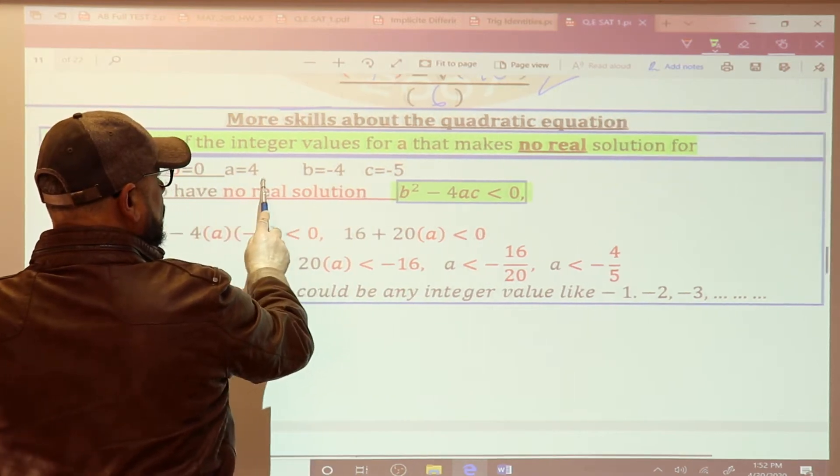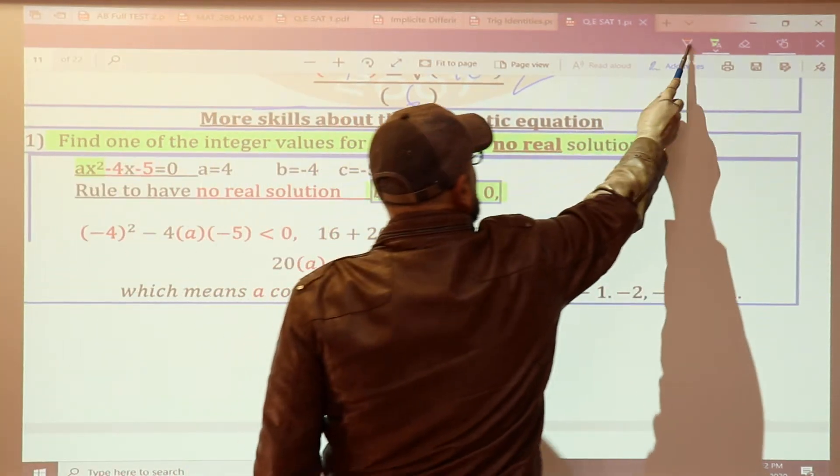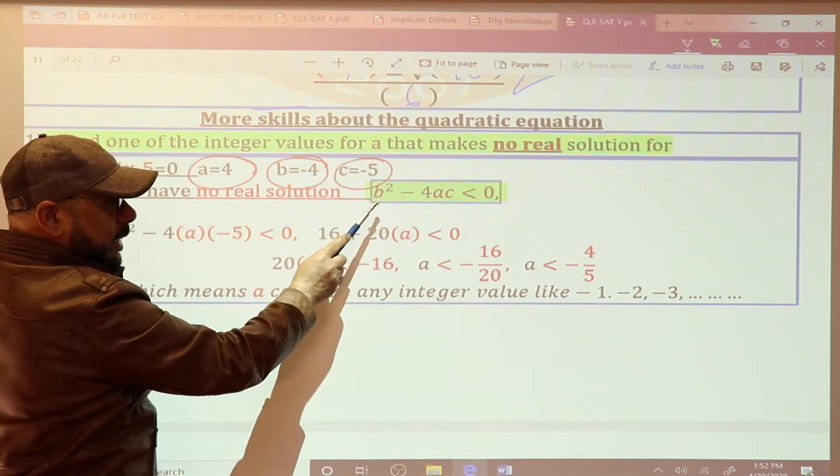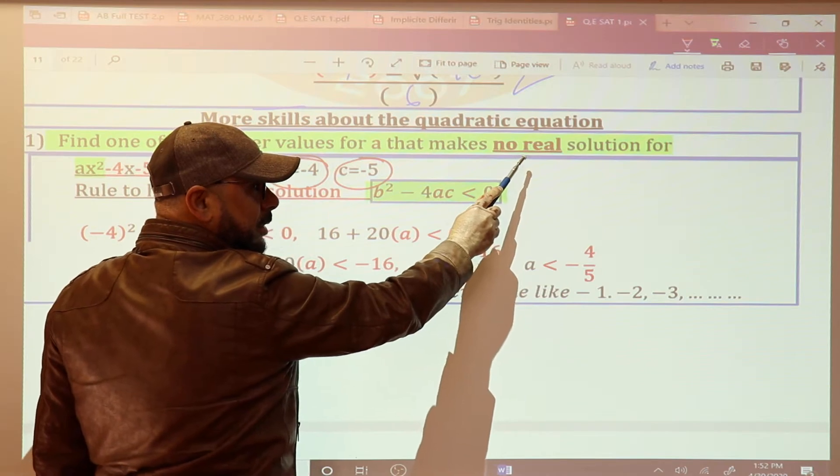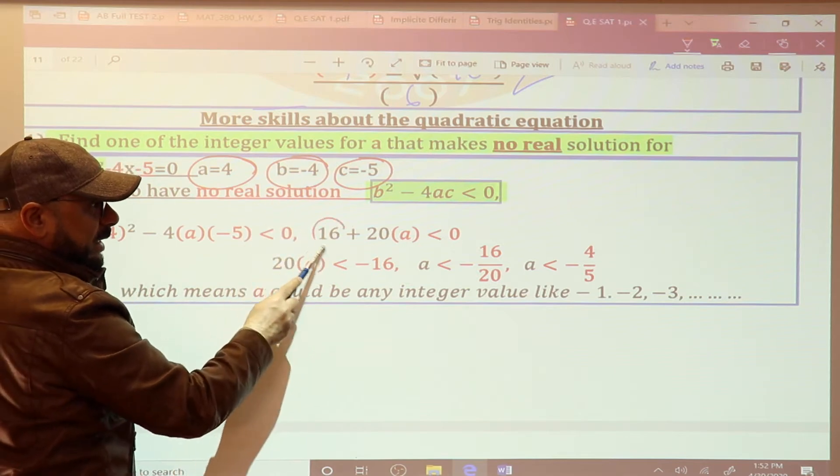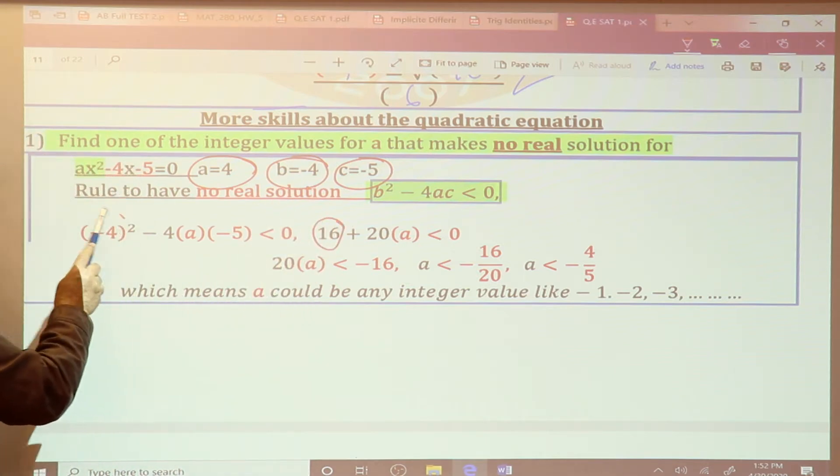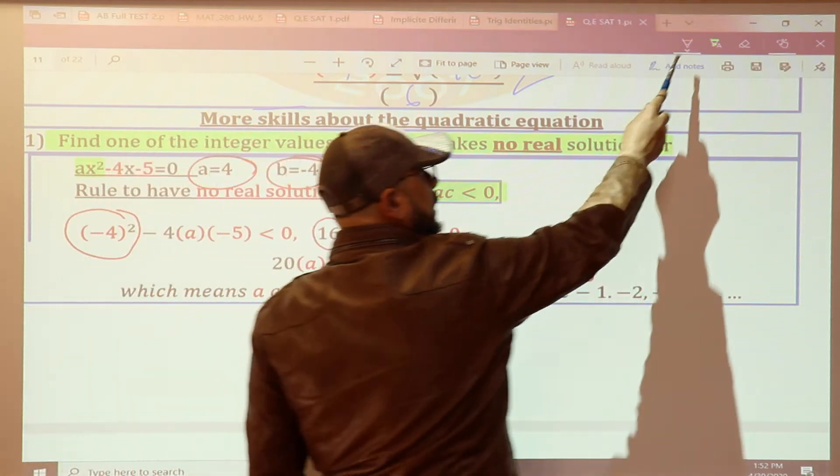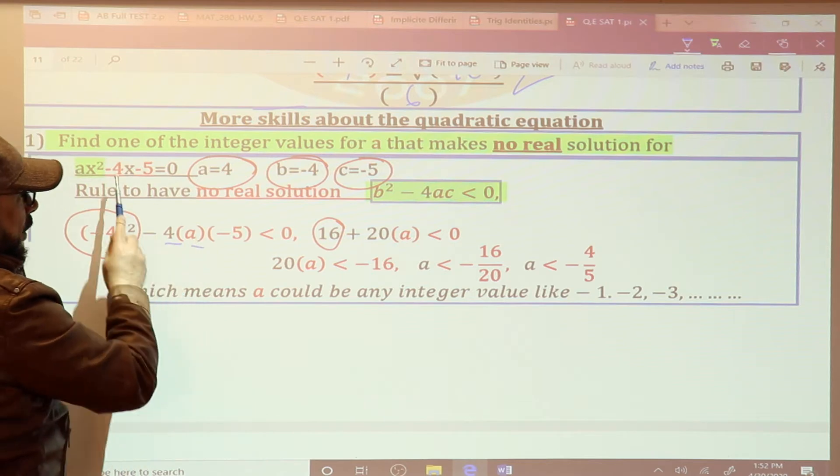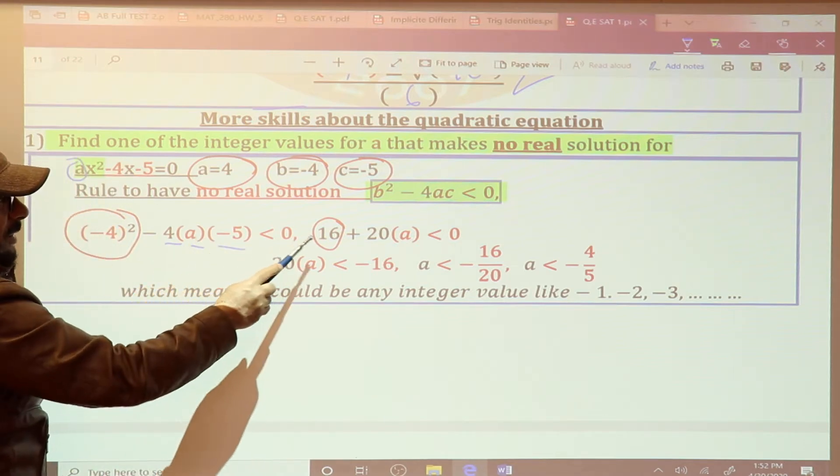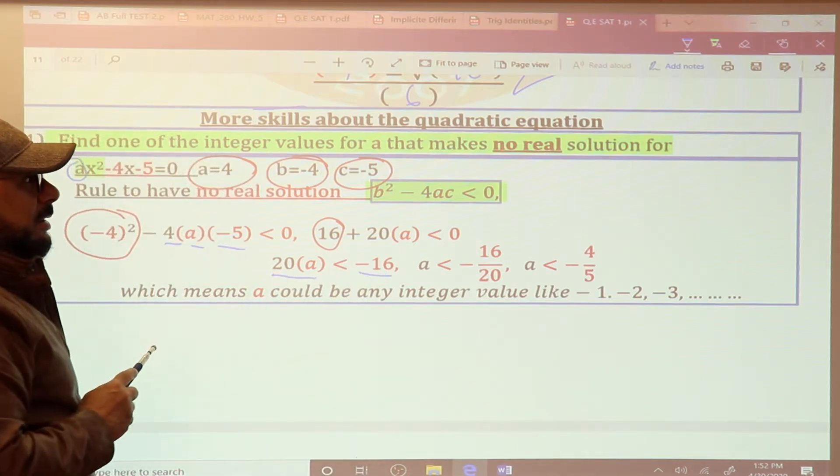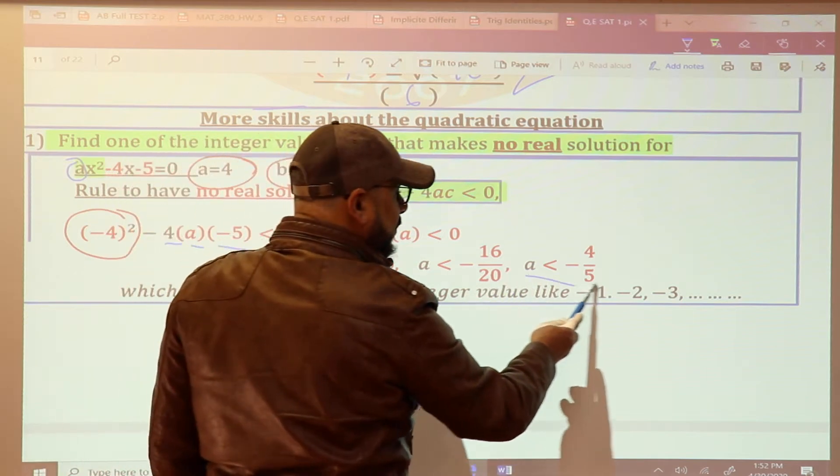A equals 4, B is negative 4, and C is what? B is negative 4. Then look. What he asks? Then you make B squared minus 4AC less than 0. What B? Negative 4, right? When you square the negative 4 becomes what? 16, right? You see that? Minus 4 times A, what I want the A, right, times C. Now 20A less than what? Negative 16. Then A less than negative 4 over 5.